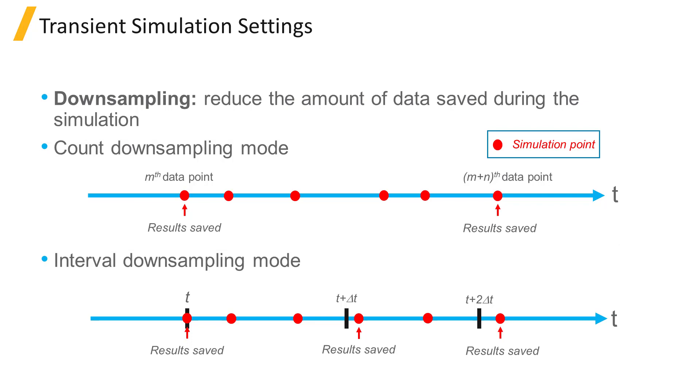On the other hand, with downsampling at an interval of delta t, simulation results will be recorded every delta t femtoseconds, and if no result is available at that exact time, closest results to that moment in time will be recorded.